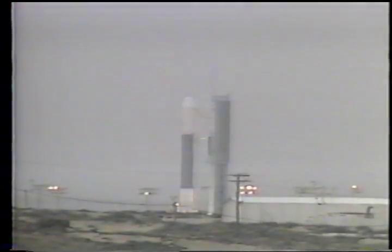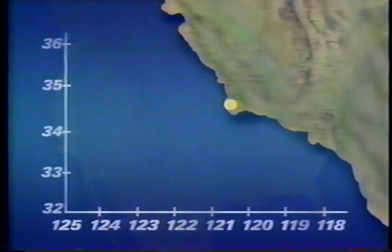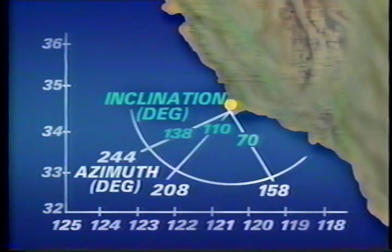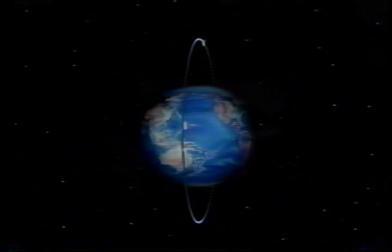To obtain an orbit with an inclination greater than 57 degrees, the spacecraft is launched from Vandenberg Air Force Base in California. Vandenberg offers southerly launches with orbit inclinations between approximately 70 degrees prograde through 138 degrees retrograde. A significant advantage of launching from Vandenberg is the capability to economically achieve polar orbits with ground tracks covering all latitudes from the north pole to the south pole.